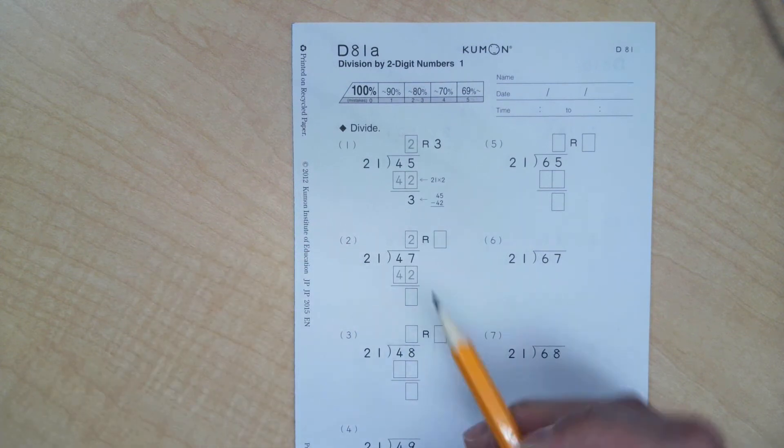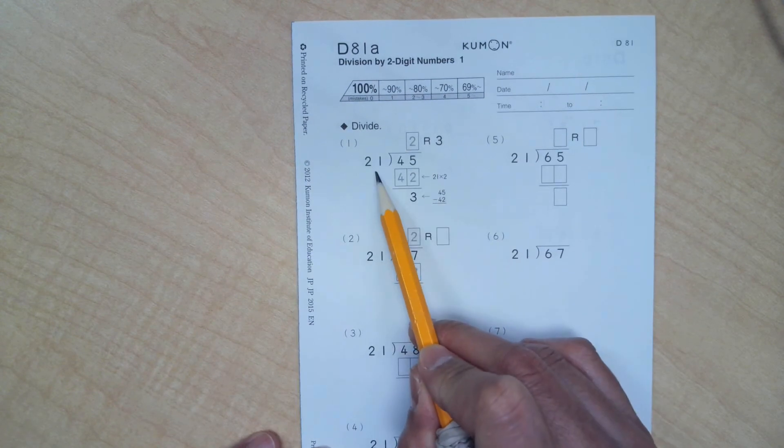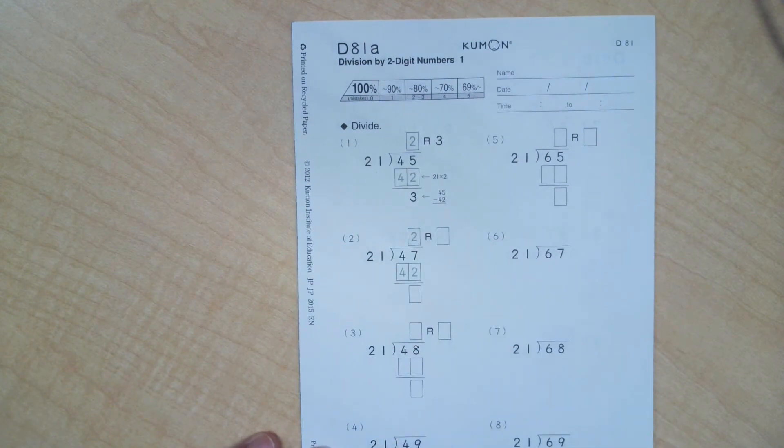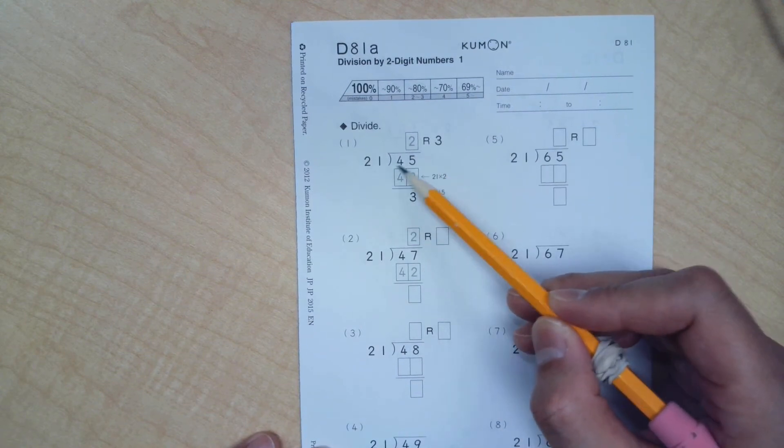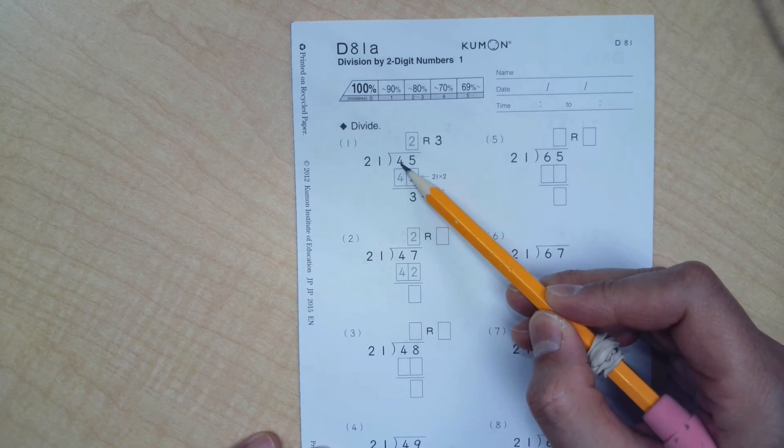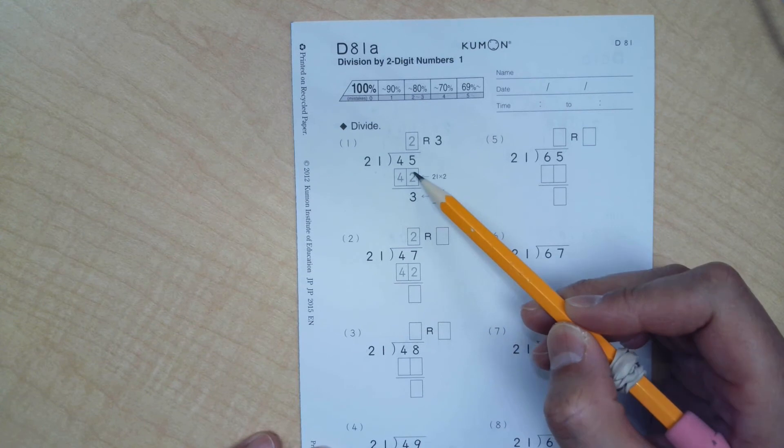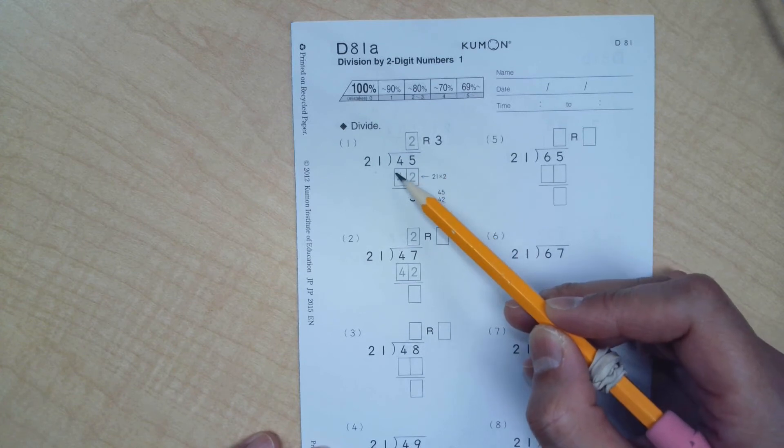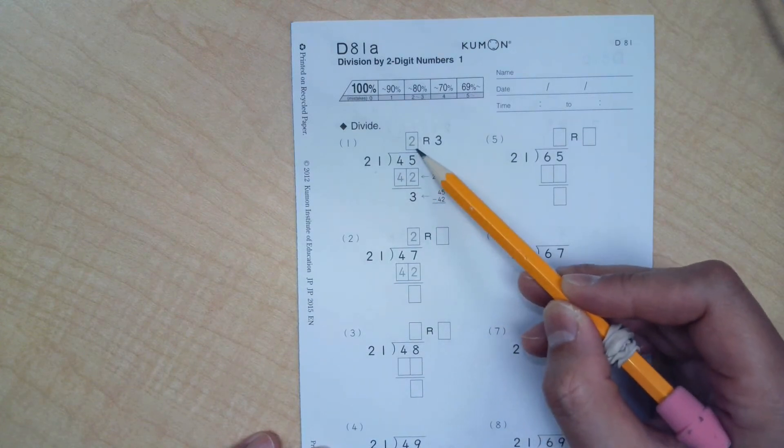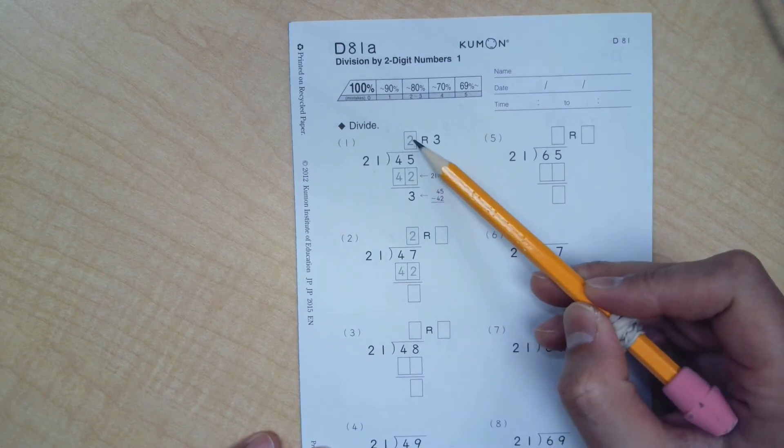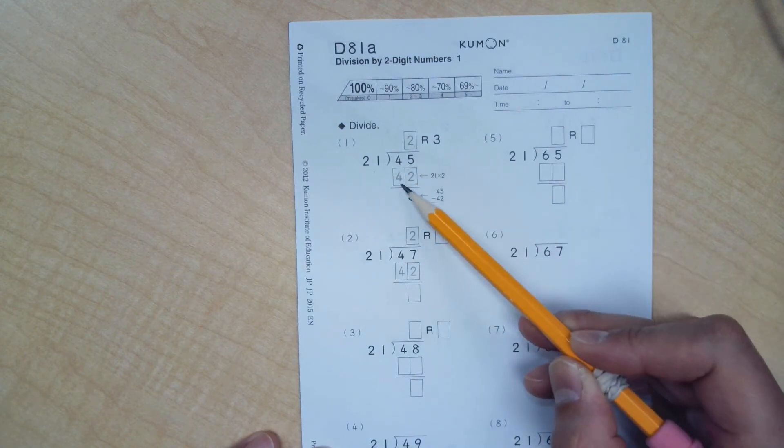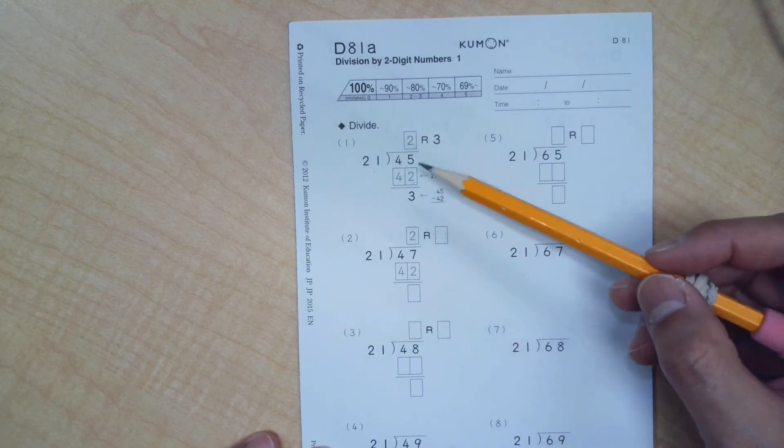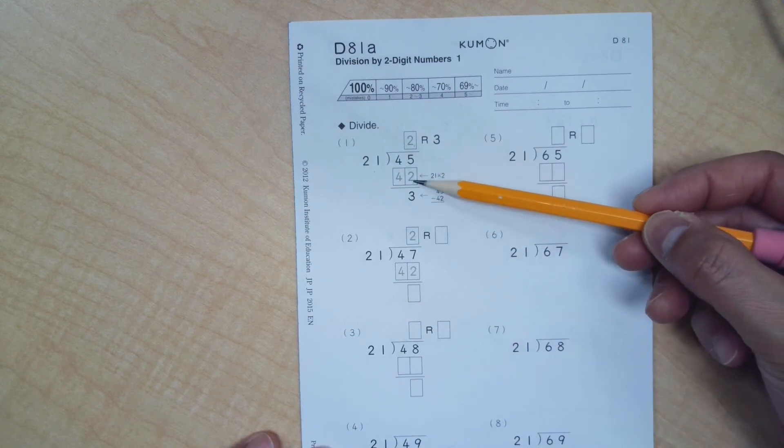So you read this by saying 45 divided by 21. Now this example was nice enough to tell you that you can skip this first space right above the 4, because 21 simply cannot go into a 4. Then the next question is, how many times can this 21 go into this 45? And again, this example was nice enough to show you that 21 can go into 45 two times. So what you will do is you will put a 2 up here, and then do your multiplication. What's 21 times 2? That's 42.